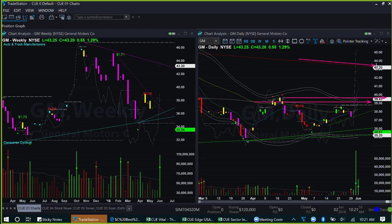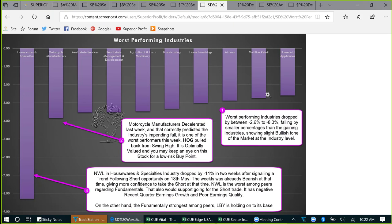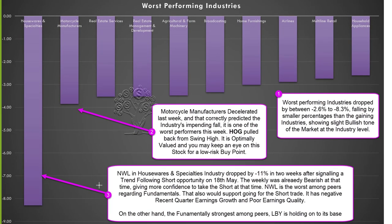By the way, the worst-performing industries declined by smaller percentages than the industries that were the best performers — that also shows that at industry level the market is slightly bullish. In Q-Edge to find the worst-performing industries we double-click on the five-day period — the worst performers come to the top. Housewares Specialties is the worst performer and this industry was weak for a long time. Motorcycle Manufacturers — weak for a long time. Let's look at NWL and HOG in these two industries. Now peer analysis is very easy using the scorecard — we just locate the stock and click on the magnifying glass (the Analyze button). We have three stocks here in the Housewares and Specialties industry — all of them are optimally valued. But if we look closely, LBY is the best among them.